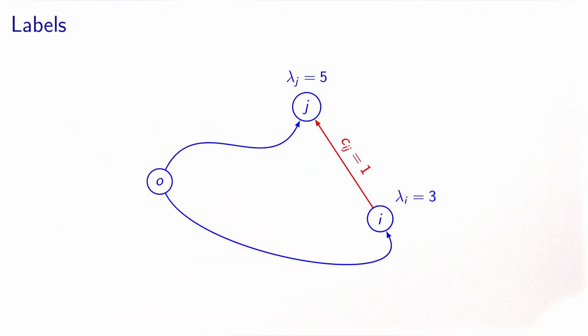But now we have found a new path from o to j, this one, the path that goes from o to i, and then takes the arc ij. This path has a length which is 3 plus 1, which is 4.